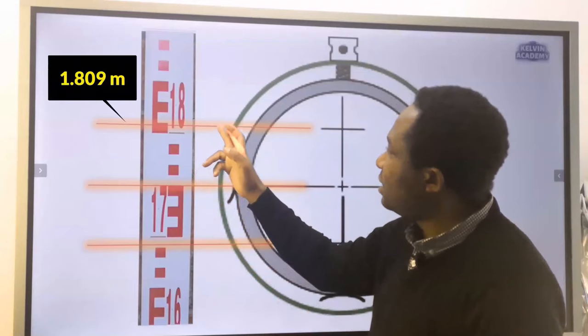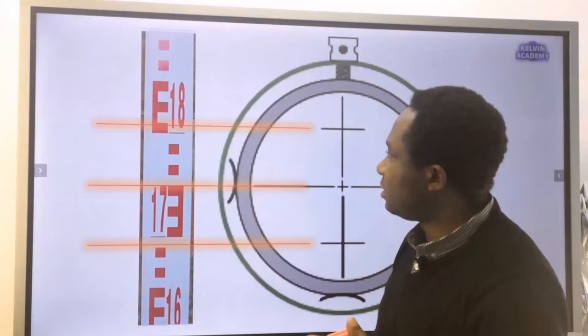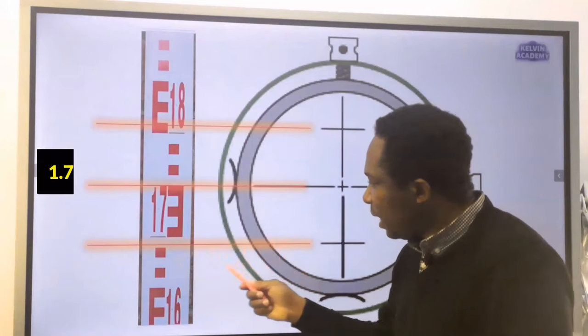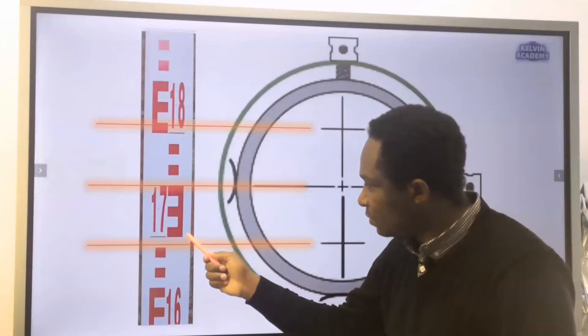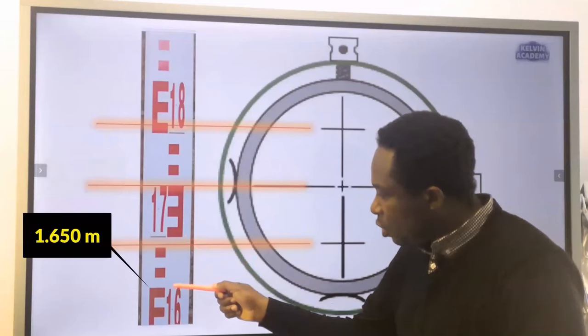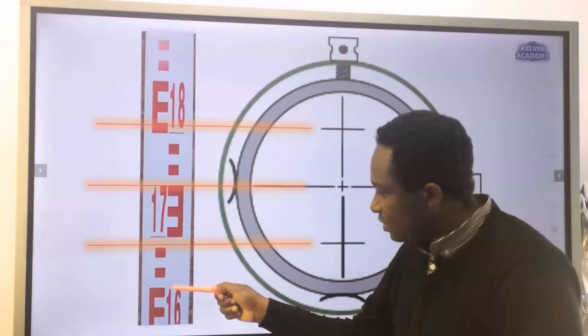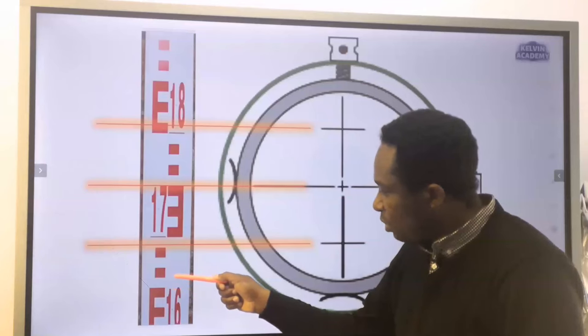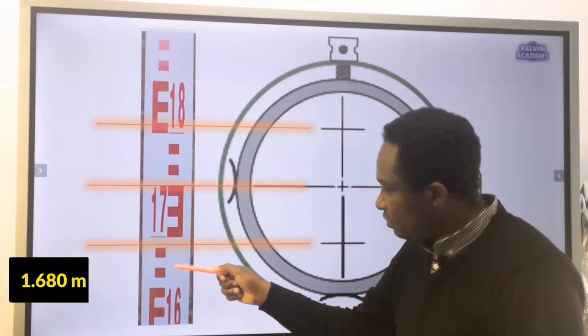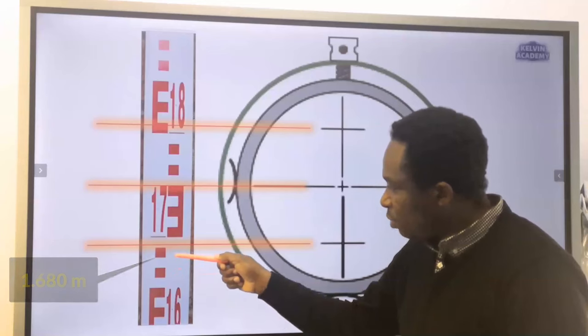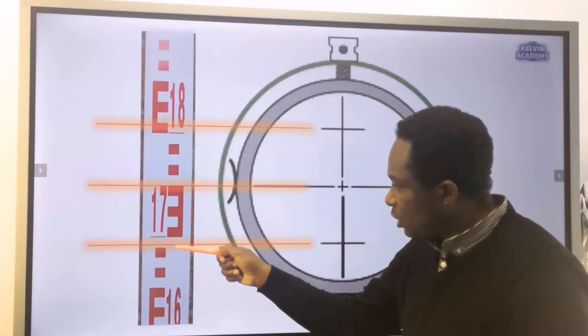This bottom hair is not up to 1.700. This is 1.650. This is 1.660. This is 1.670. This is 1.680. This is 1.690.